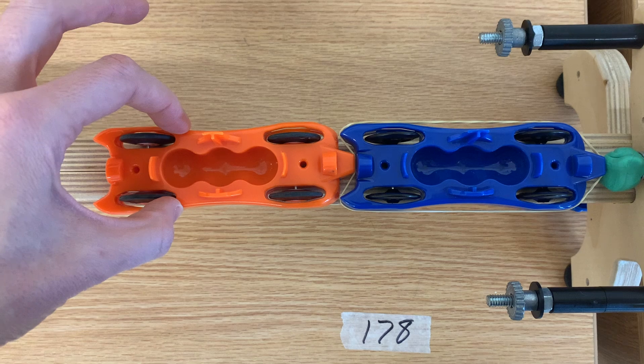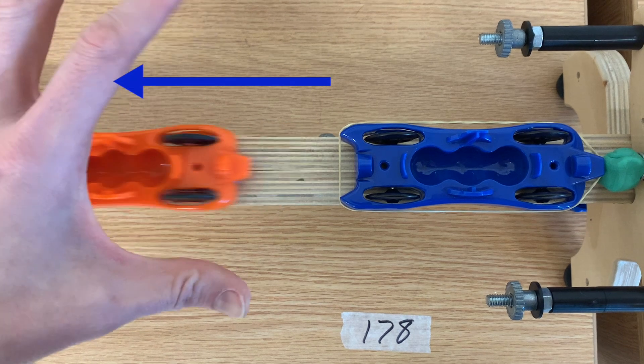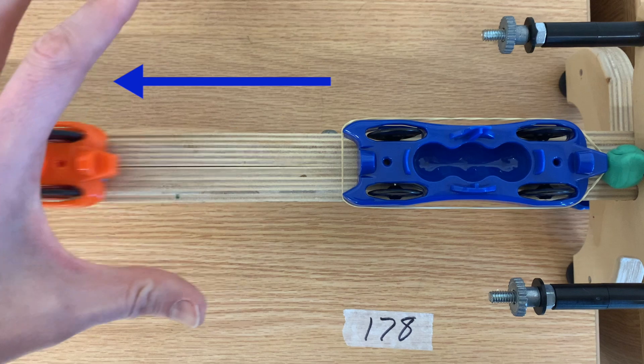The rubber band rebounds, applying a force to the orange car. Since that force is unbalanced, the car accelerates. The blue car doesn't move.